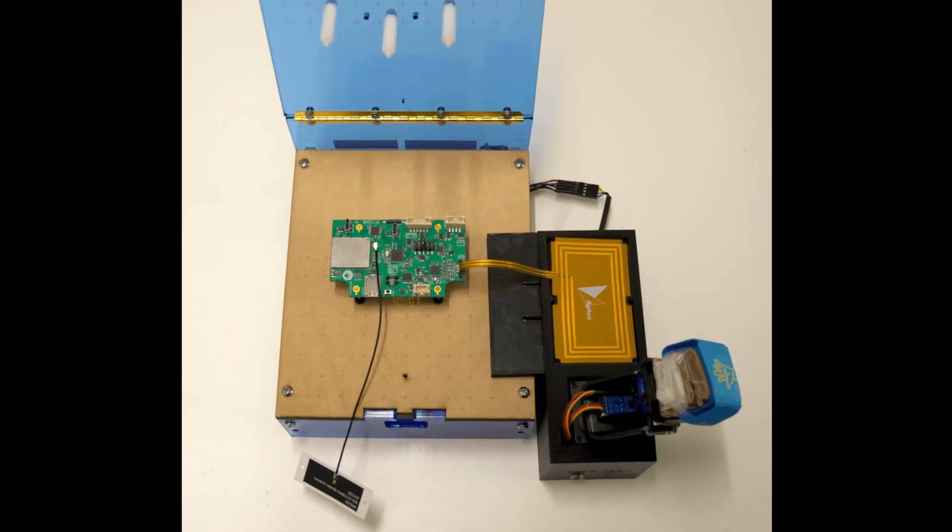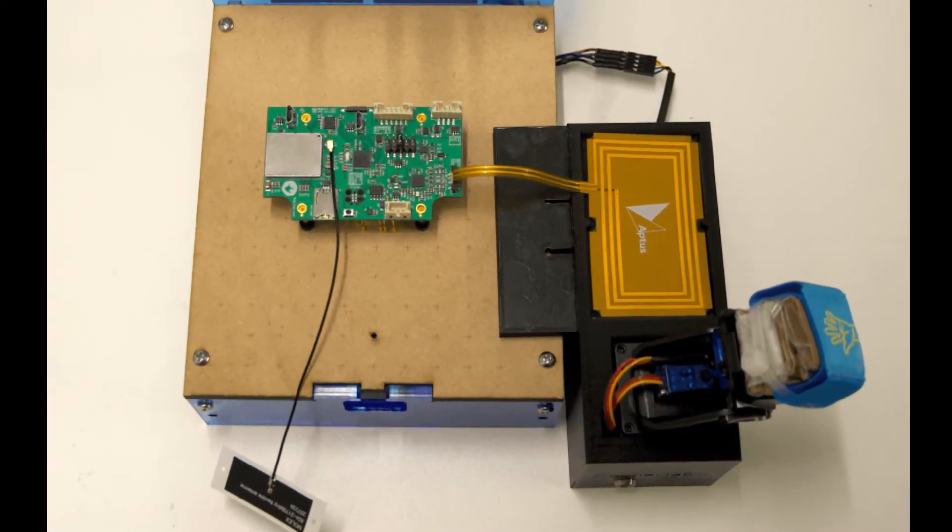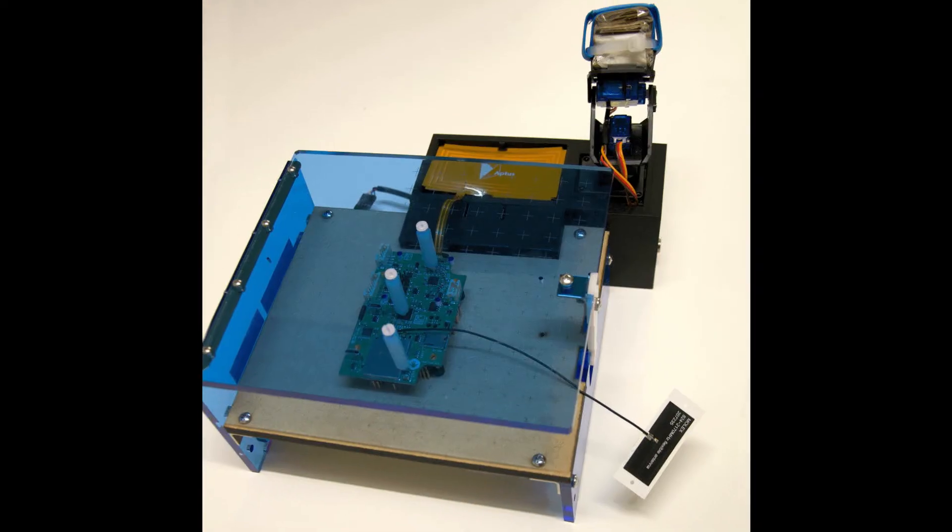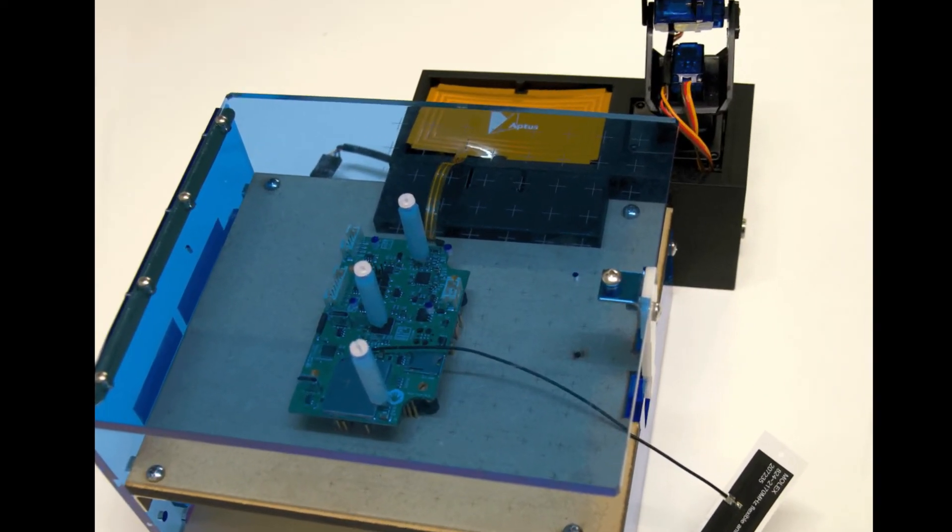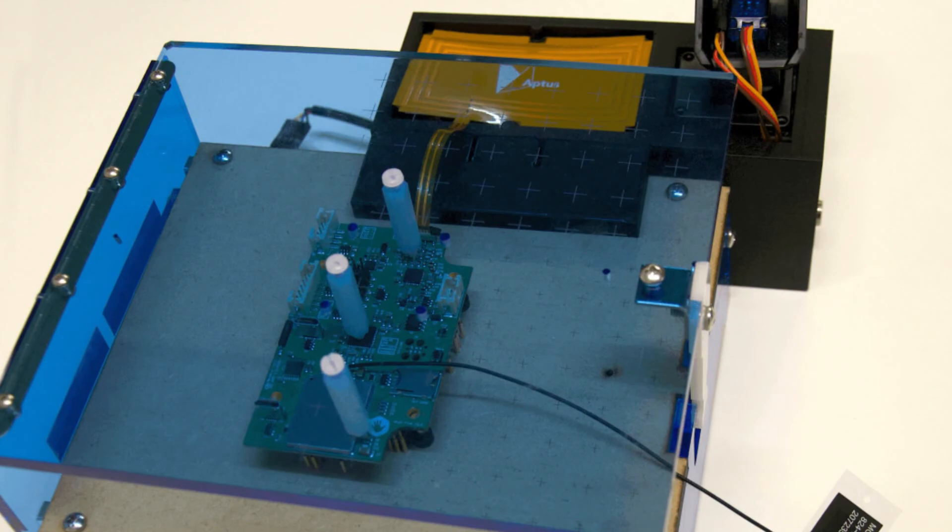In use, the board under test sits on the fixture in the usual way with the NFC antenna to the side. During testing, the arm is able to present an NFC tag to the reader antenna to test its functionality.